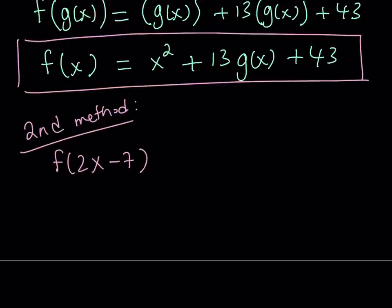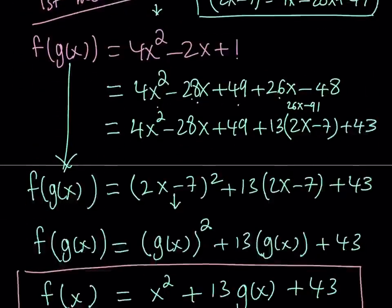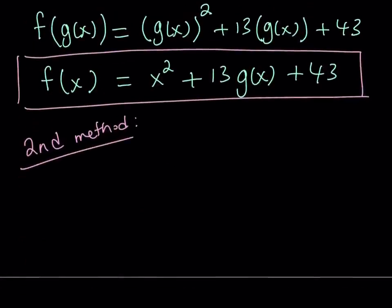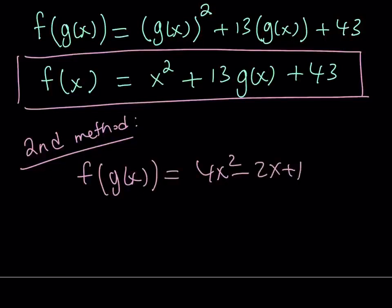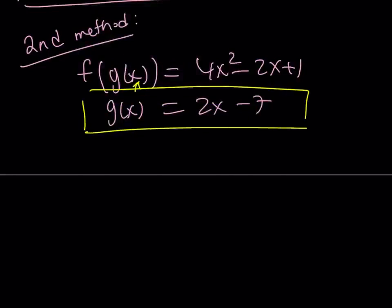Let's rewrite the original system: f of g of x equals 4x squared minus 2x plus 1, and g of x equals 2x minus 7. Since g of x is given, why don't we replace g of x with that directly? So now we have f of 2x minus 7 equals 4x squared minus 2x plus 1.